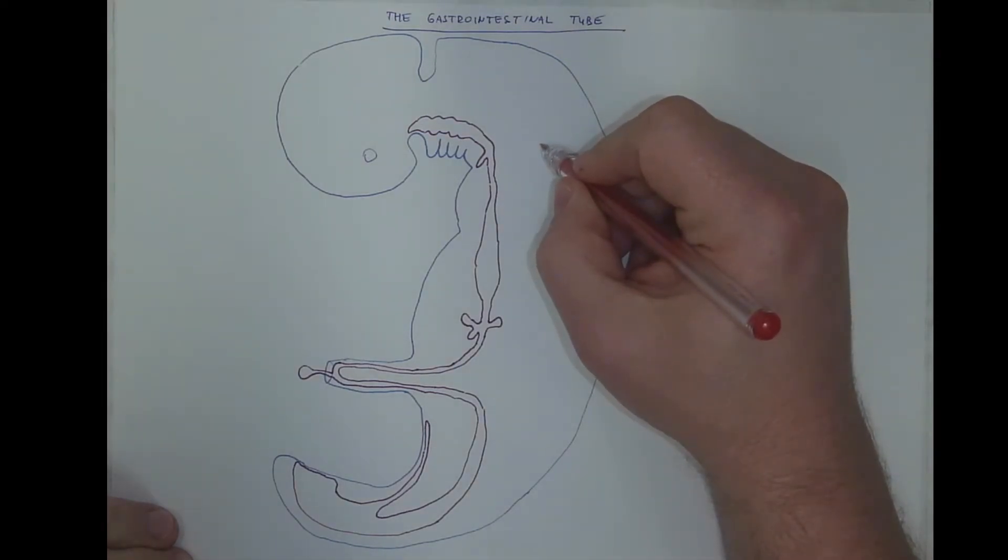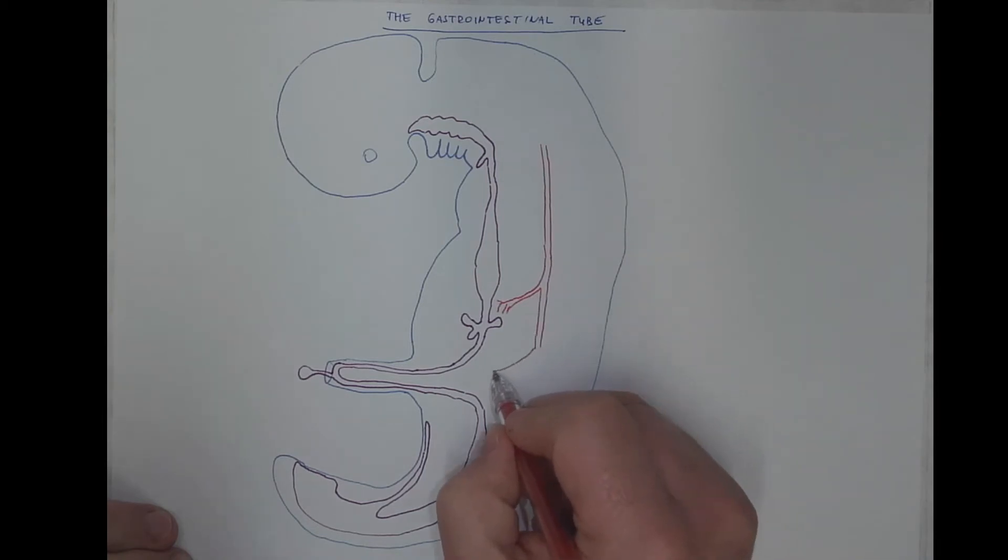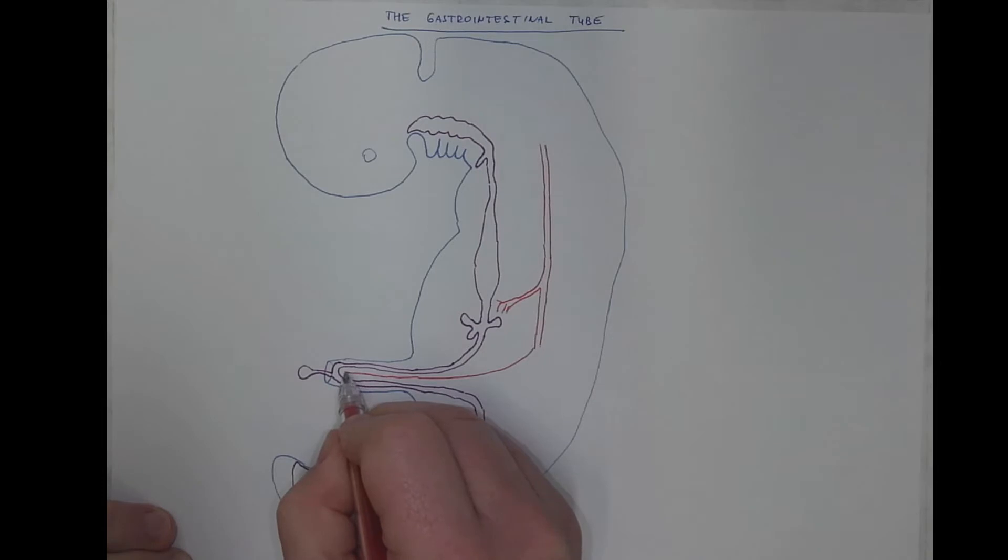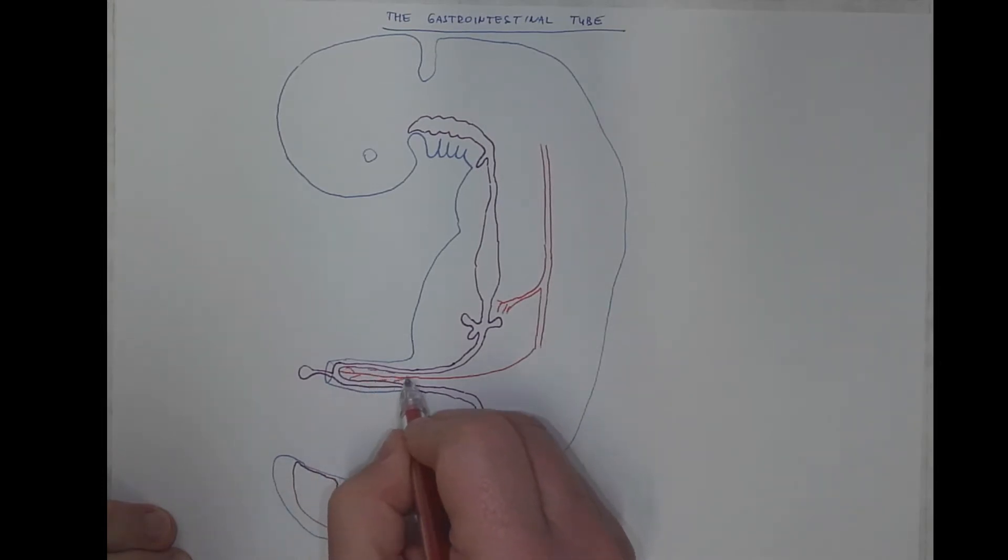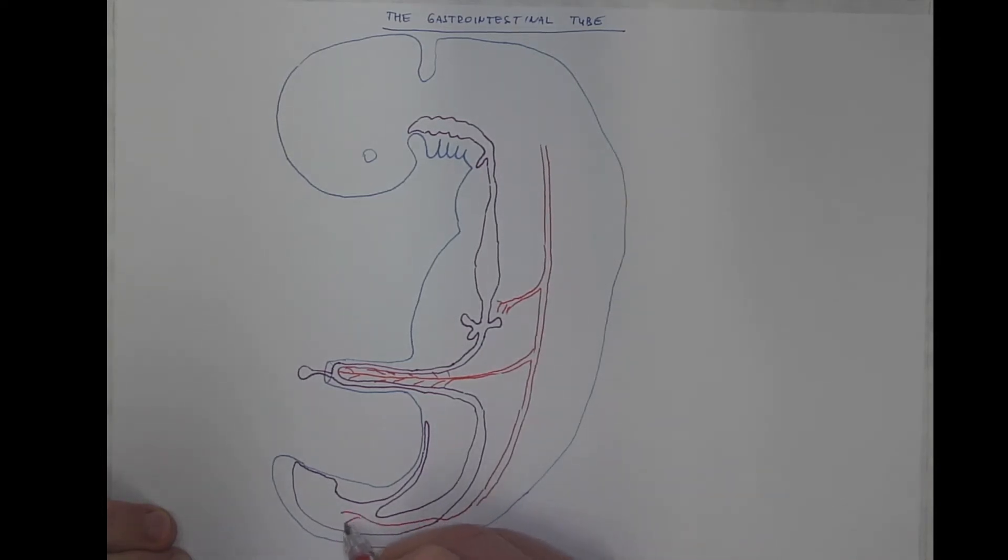Now each part of the tube has some dominant artery, which are branches of the dorsal aorta. So the region of the foregut is primarily supplied by the celiac trunk, while the second division, the midgut, is predominantly supplied by the superior mesenteric artery, which actually forms an axis of this intestinal loop and its future rotation, while the hindgut is preferentially supplied by the inferior mesenteric artery.